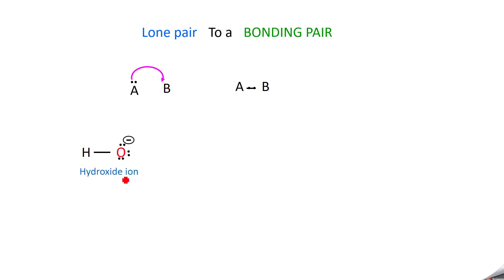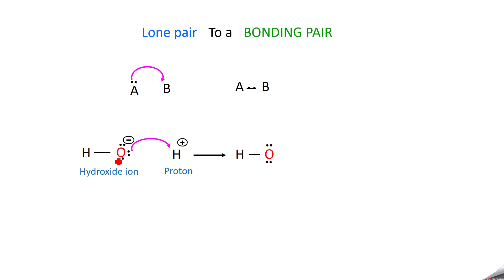Take an example: this is the hydroxide ion and a proton, H⁺. The oxygen has three lone pairs of electrons. One of the lone pairs is shifted to the proton H⁺ ion, so you will get hydrogen bonded to oxygen with the two remaining lone pairs. The shifted lone pair becomes a bond between oxygen and hydrogen.